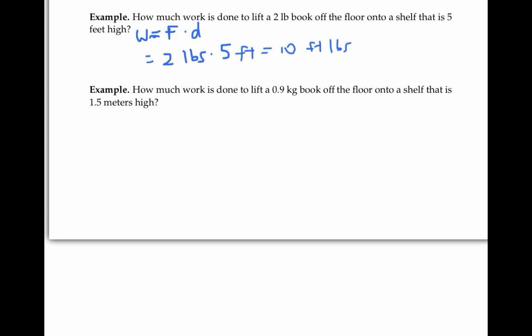Now let's do the same problem in metric units. The two pound book is actually a 0.9 kilogram book, and we're lifting it off the floor onto a shelf that's about 1.5 meters high. Well, work is still force times distance. But now the force is 0.9 kilograms times the acceleration due to gravity 9.8 meters per second squared times our distance of 1.5 meters. Or in other words, 13.23 joules.